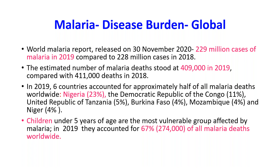In 2019, six countries accounted for approximately half of all malaria deaths worldwide: Nigeria accounting for 23 percent, the Democratic Republic of the Congo, the United Republic of Tanzania, Burkina Faso, Mozambique, and Niger. Children under five years of age are the most vulnerable group affected by malaria; in 2019, they accounted for 67 percent of all malaria deaths worldwide.